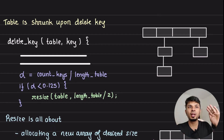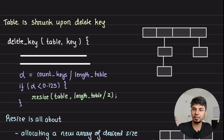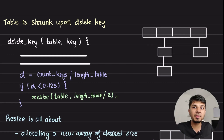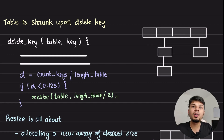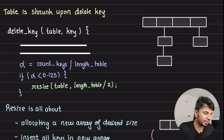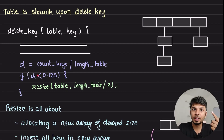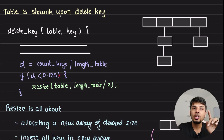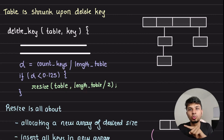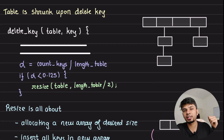With chained hashing, we also need to shrink the table. It's possible that you've deleted a bunch of keys, leaving a large number of empty slots and wasting contiguous heap memory. We shrink when the load factor becomes 1/8 (0.125), and this is triggered in the delete key operation. In the delete function, you compute alpha = count_keys / length_table, and if alpha is less than 0.125, you trigger a resize to length_table / 2, making it half the size.